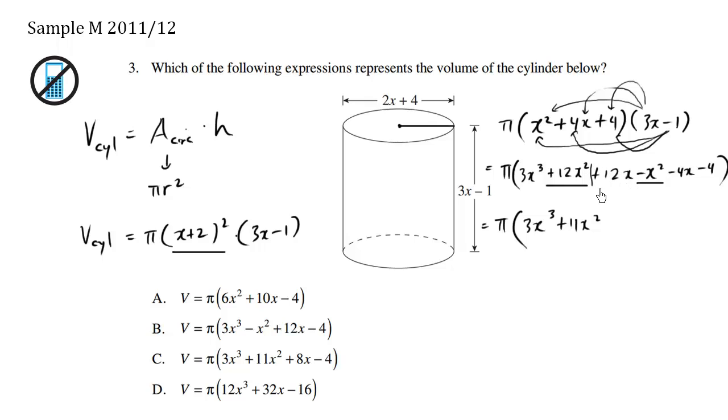And then I have a positive 12x here, and I have a negative 4x here. So the positive 12x and the negative 4x becomes a positive 8x.